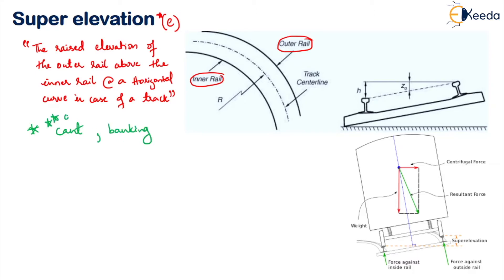The other names of super elevation E are cant or banking. Truly speaking, this term should be used to represent the angle of the transverse slope which we provide to the sleepers, so that we pack the ballast under the outer edge. The notation is E or SE.